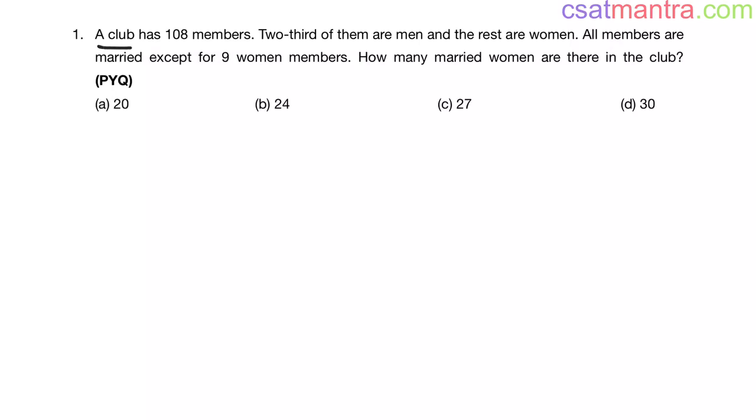A club has 108 members. Two-third of them are men and the rest are women. All members are married, except for 9 women members. How many married women are there in the club?